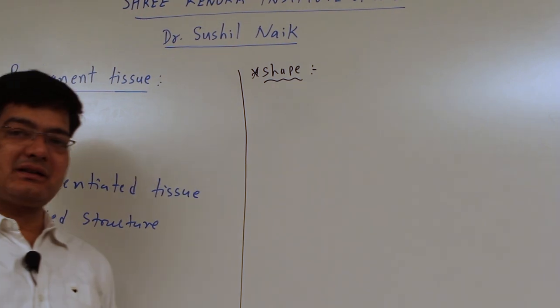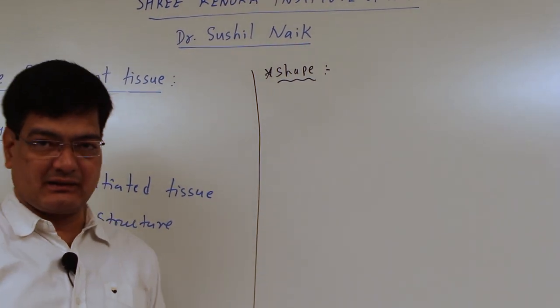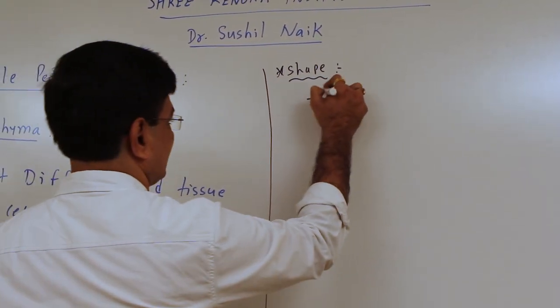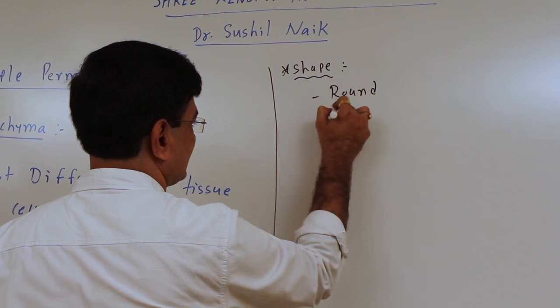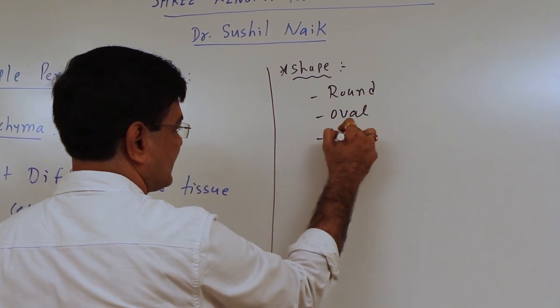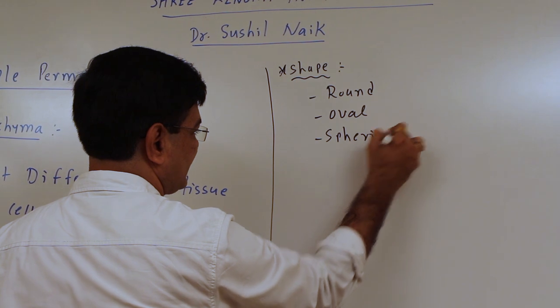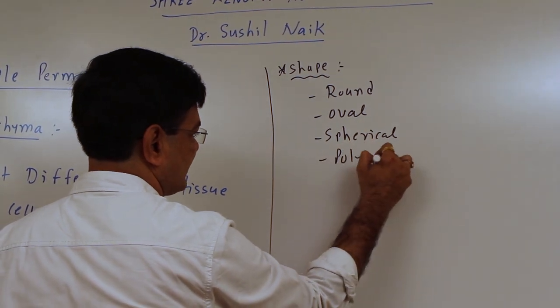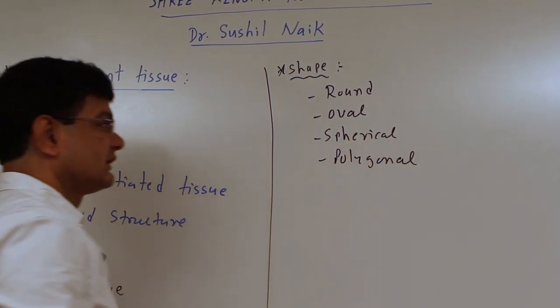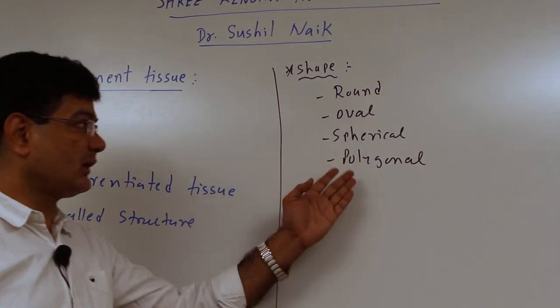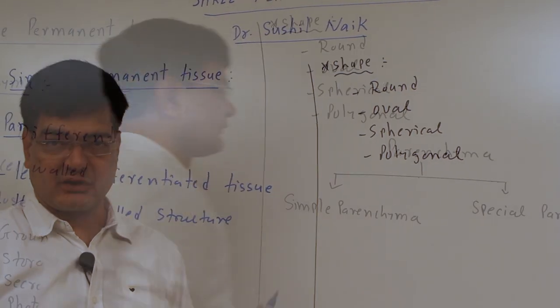If we observe parenchyma, it has different shapes in its cells like round, oval, spherical, and polygonal. These different kinds of shapes are found in the case of parenchyma tissue.